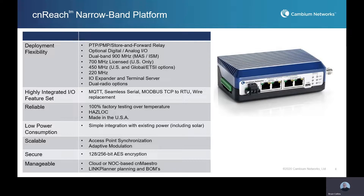Another important area across all of Cambium's products is how to make the best use of that precious spectrum — spectral efficiency is key. CN Reach is even more so because of the narrowband requirements. We support adaptive modulation and synchronization, so you can place multiple access points on a tower adjacent to each other and synchronize their transmit and receive duty cycles so they are not self-interfering. The product is secure, meeting all encryption standards as well as secure interfaces for HTTPS and SNMPv3.